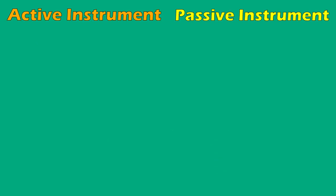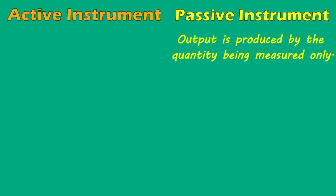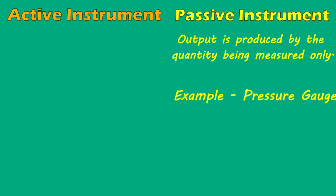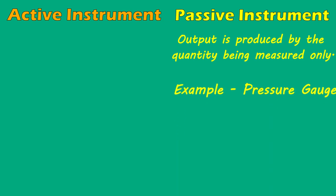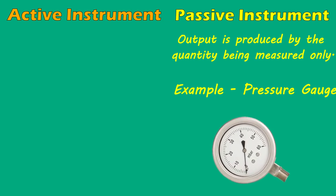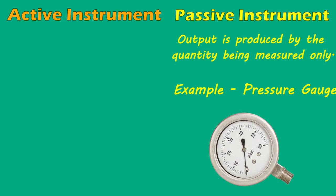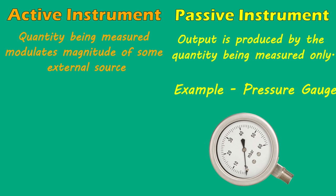Active and Passive Instruments. Passive instruments are those in which the output is entirely produced by the quantity being measured. An example is a pressure measuring gauge, where the fluid pressure is translated into pointer movement to display the measured quantity. Active instruments are those in which the quantity being measured modulates the magnitude of some external source, be it electrical, pneumatic or hydraulic.